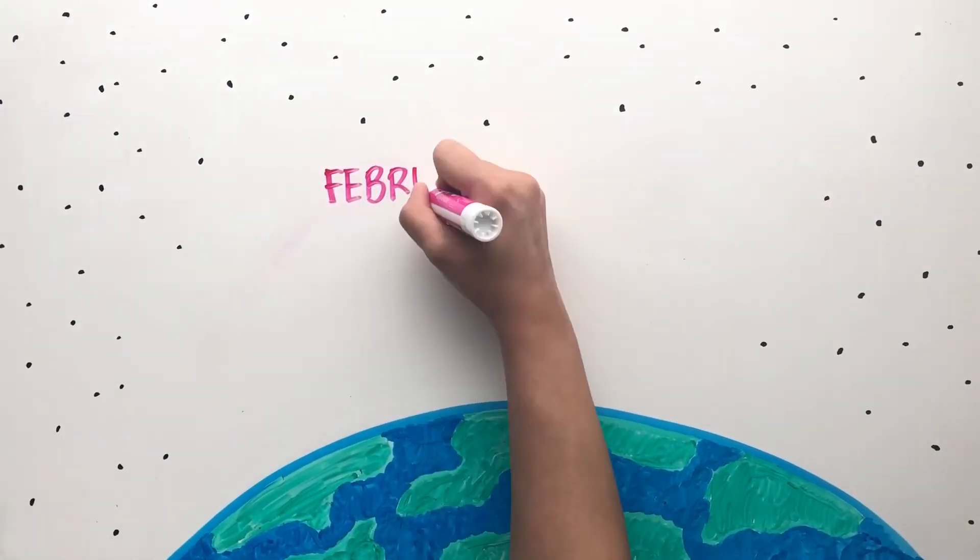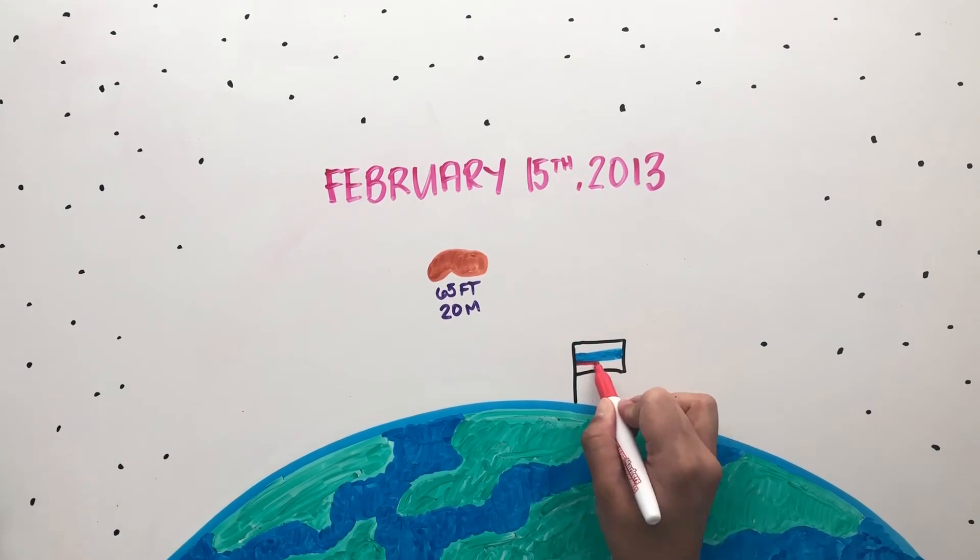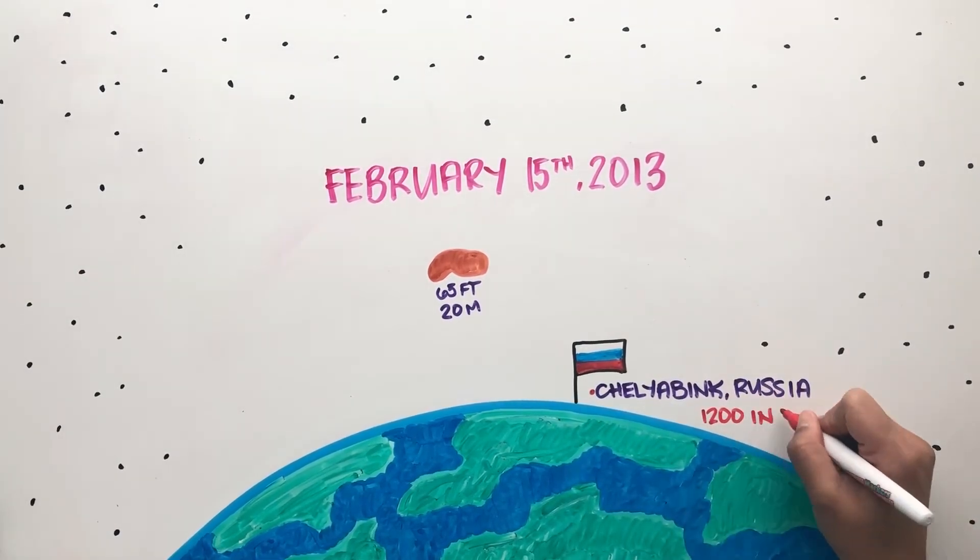On February 15, 2013, an asteroid 65 feet wide crashed into the city of Chelyabinsk in Russia injuring 1,200 people.